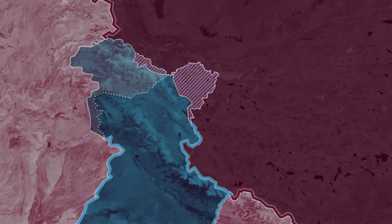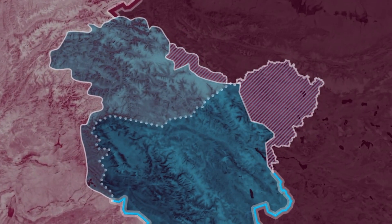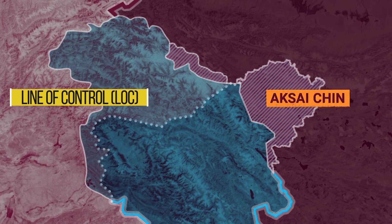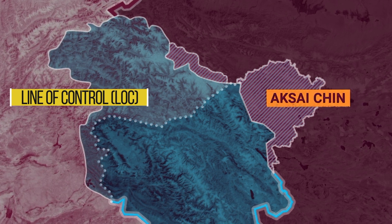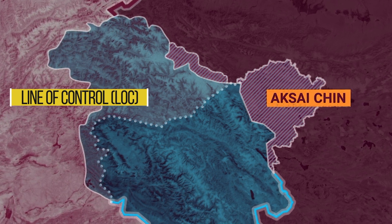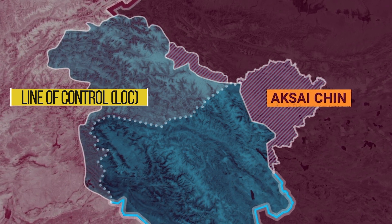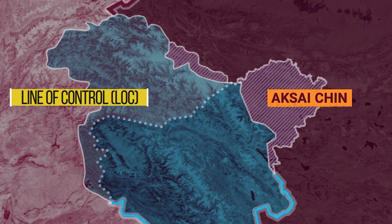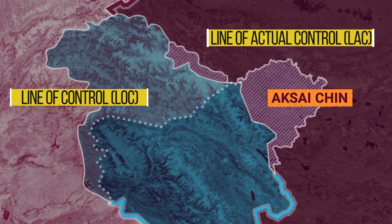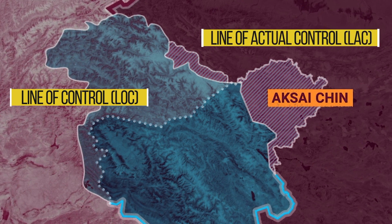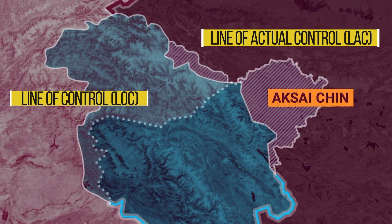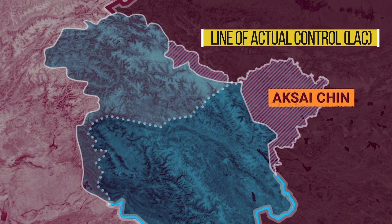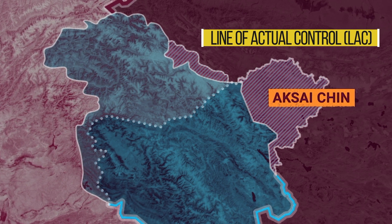You might know the border between Pakistan-occupied Kashmir and India is called the Line of Control, LOC. The border between Chinese-occupied Ladakh and India is called LAC — Line of Actual Control. There are some critical differences between LOC and LAC.